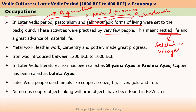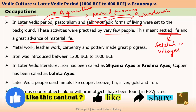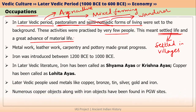Since people started to live in villages, there was also an advance in material life. Material life simply means the material things that people were using increased greatly. For example, in the later Vedic period, the number of pots they were using, the type of houses they were building, and the type of metal implements they were using all advanced greatly. That is why we say there was an advance in material life in the later Vedic period.